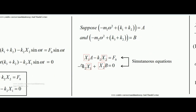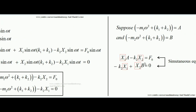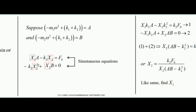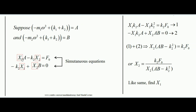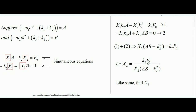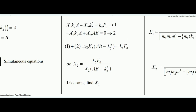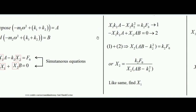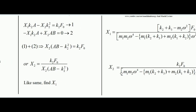These are simultaneous equations in X1 and X2. To solve: multiply the first equation by k2 giving X1·k2·A - k2²·X2 = k2·F₀, and multiply the second by A giving -k2·A·X1 + X2·A·B = 0. Adding these two equations, X1 terms cancel, yielding X2·(A·B - k2²) = k2·F₀, so X2 = k2·F₀ / (A·B - k2²).